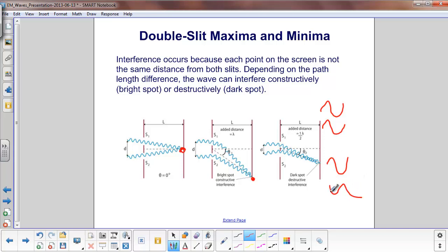And in that case, that would give you a dark spot, which would be destructive interference. And over here, where the light waves arrive in phase, you would get a bright spot and we call that constructive interference.